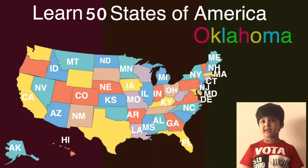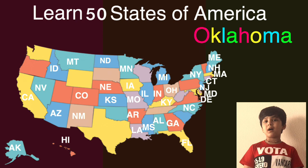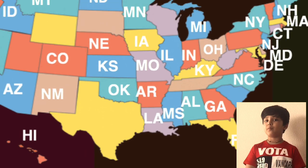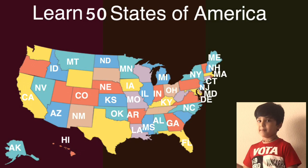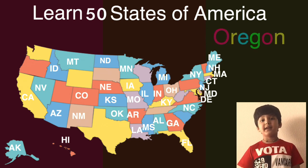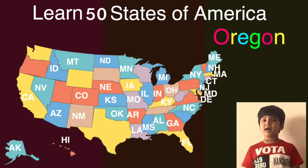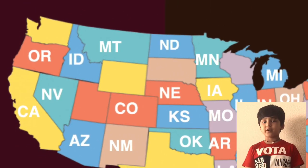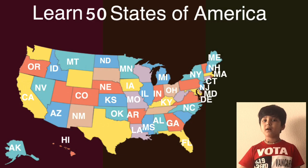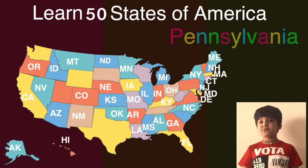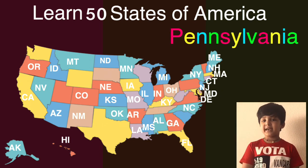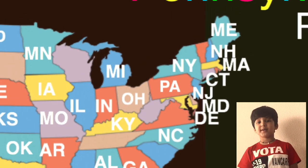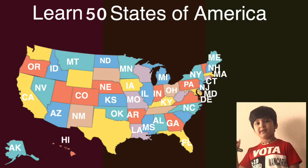The next one is Oklahoma and the short one is OK. Here comes Oklahoma on the map, can you guess what will come next? The next one is Oregon and the short one is OR. Here comes Oregon on the map, can you guess what will come next? The next one is Pennsylvania and the short one is PA. Here comes Pennsylvania on the map, let's see what will come next.